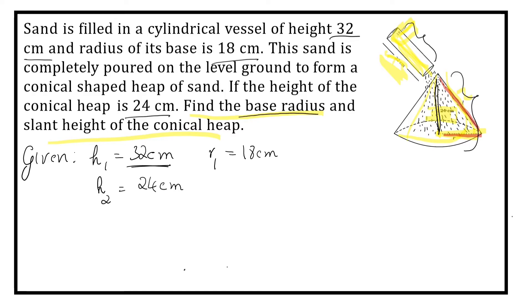We have to find base radius, this one, radius of cone, and also slant height of the cone. This is slant height. Now, already we know that volume of the things do not change. So when shape changes, volume does not change. Volume of cylinder is equal to volume of cone.